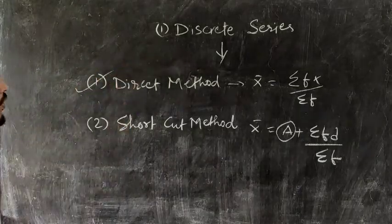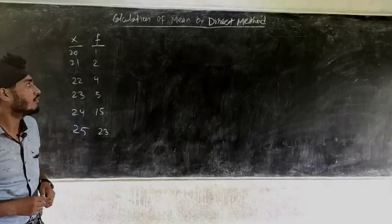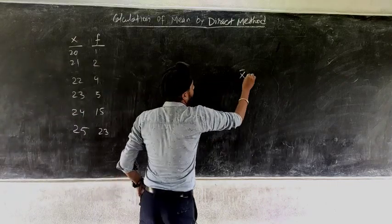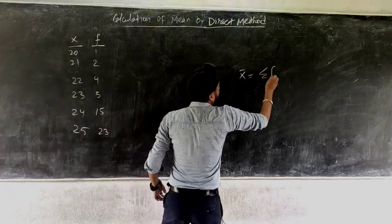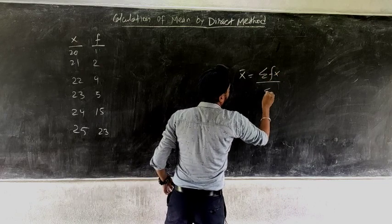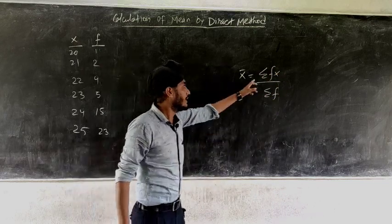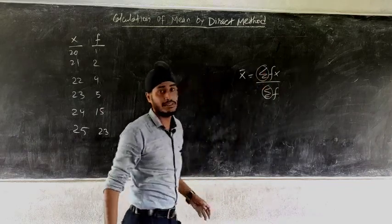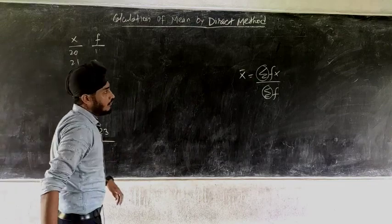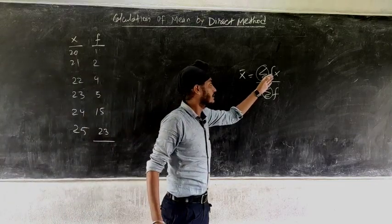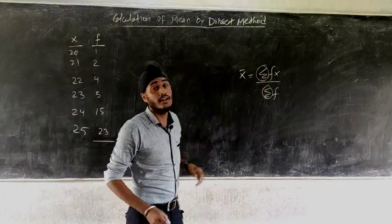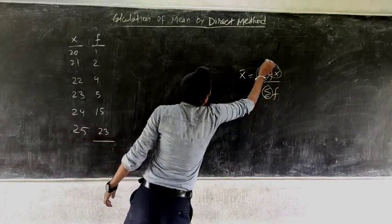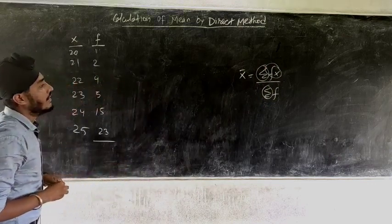Let us now do one question of mean by direct method. Under direct method the formula for finding mean is Σfx / Σf. Summation means total. So we require Σfx and Σf to find mean. Let us see how to find Σfx.